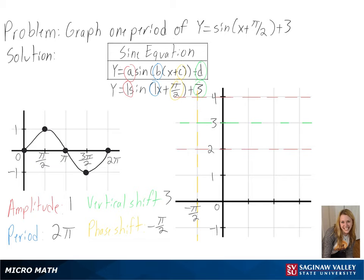But since we are moving pi over 2 units to the left, we will start at pi over 2, and then move up to 0, and then through pi over 2, back down to pi, and then back up to 3 pi over 2.